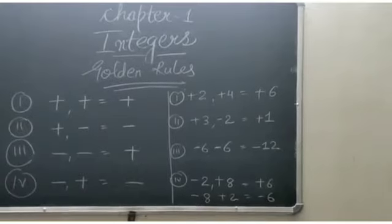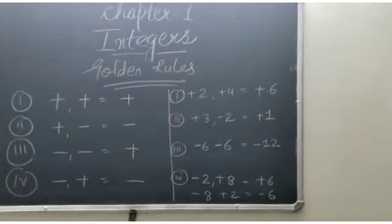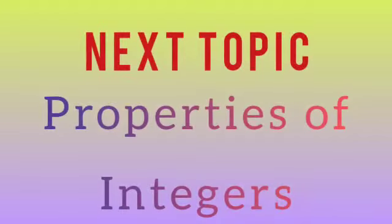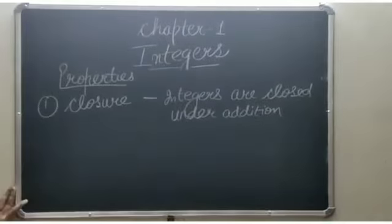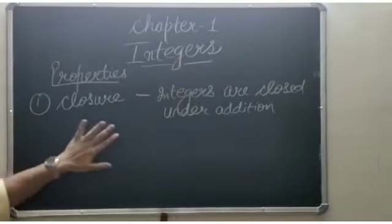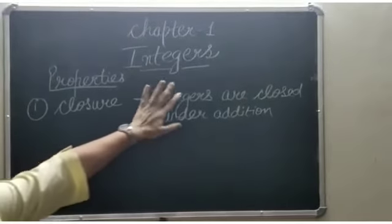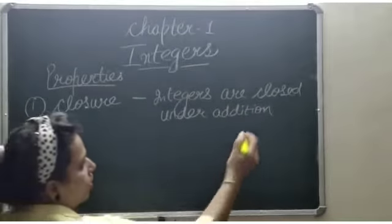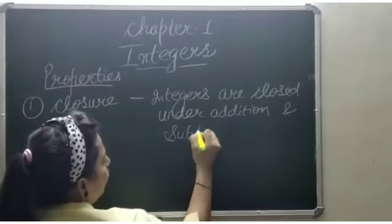So in this way, you can do the addition and subtraction of the sums. Now, properties of integers. The first property is closure property, where integers are closed under addition and subtraction both.